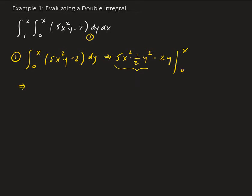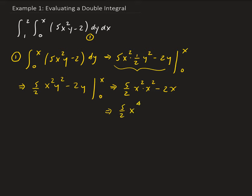Simplifying this expression, we're going to get 5 halves x squared times y squared minus 2y. Now we plug in the bounds — plug 0 and x into y because we took the integral of y first. So we get 5 halves x squared times x squared, because substituting x in for y squared gives x squared, and then we get minus 2x. Plugging in 0 for y gives us 0. So this gives us 5 halves x to the 4th minus 2x.